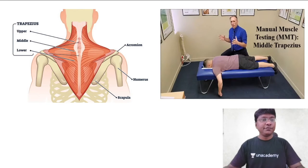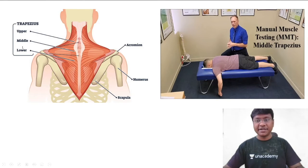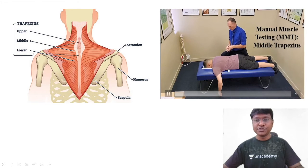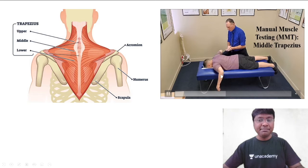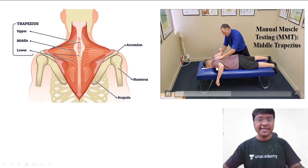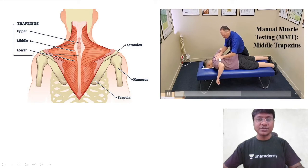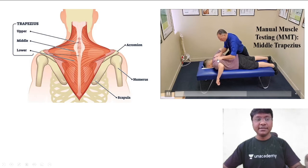For examining the middle part of the trapezius, the patient is made to lie in the prone position and asked to abduct the hands up to 90 degrees and retract the shoulders. Then you apply resistance. When the individual is able to resist, the middle part of the trapezius is intact.